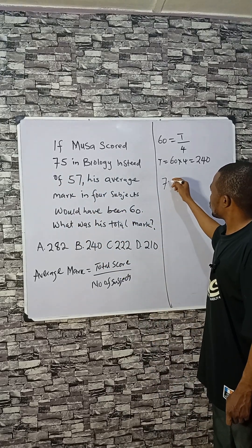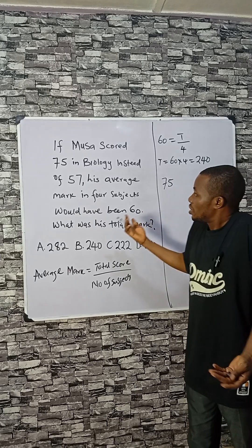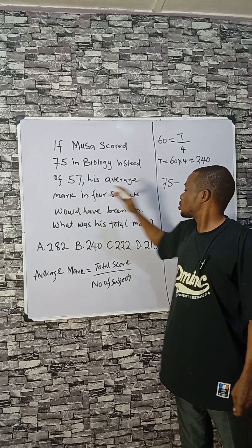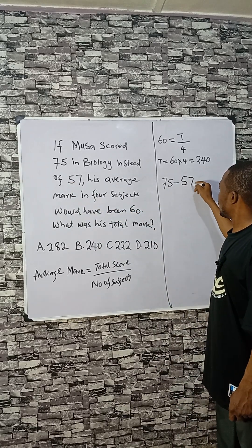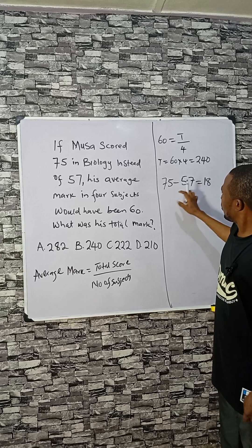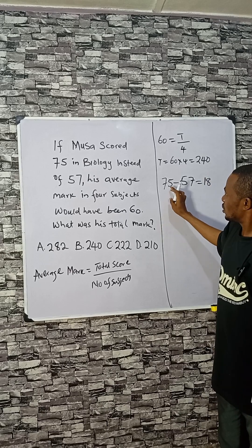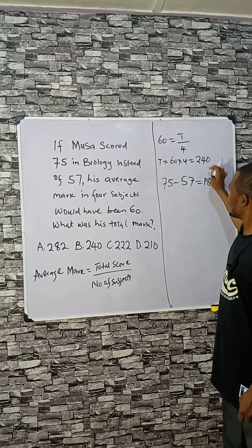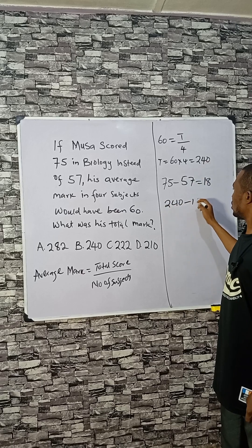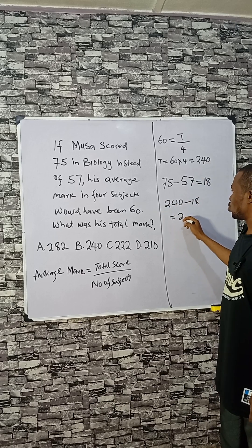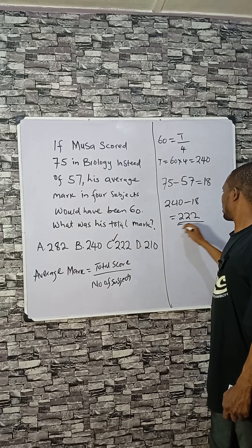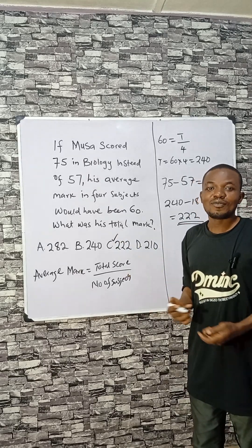The difference between the expected mark of 75 and his real score of 57 is 18. So we subtract this from the hypothetical total: 240 minus 18, which is 222. This is the correct actual total mark.